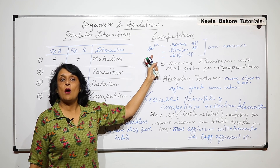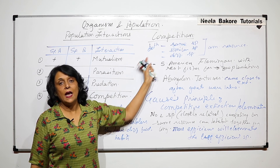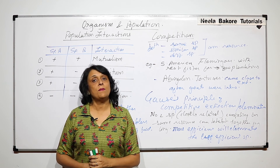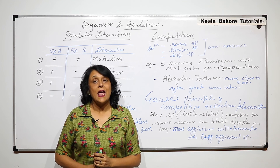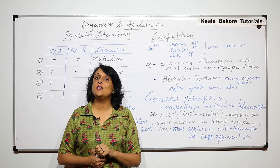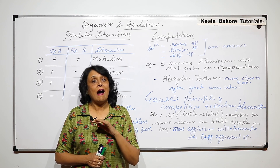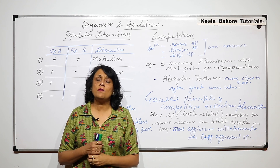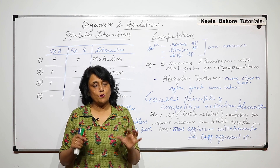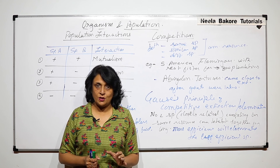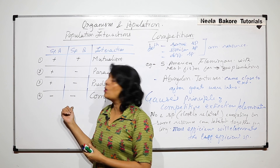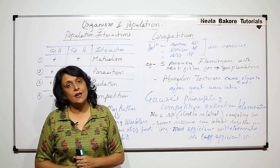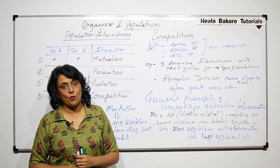There is always a competition, and competition is normally for the same resource. Both species get harmed in this case, because competition always results in a loss for both species. This is one more type of interaction. In the next part, we will take a few more.